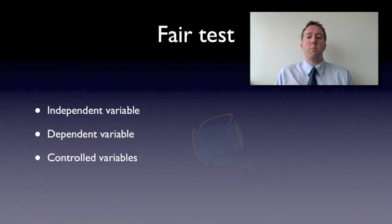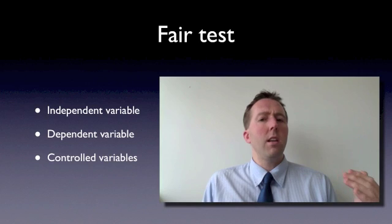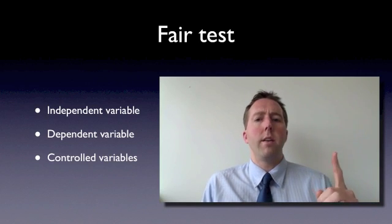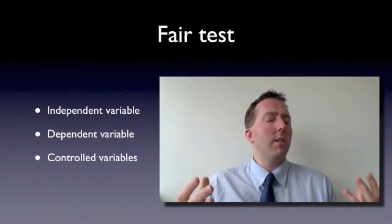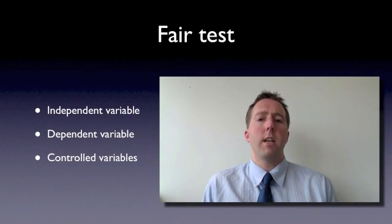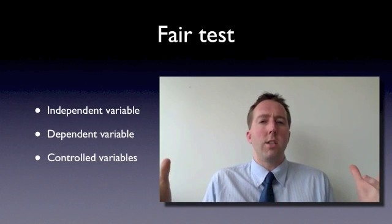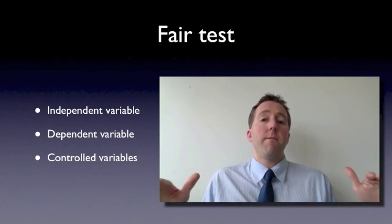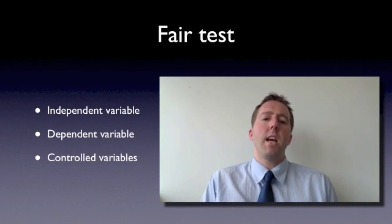When you do an experiment, it's really important that you think about the variables. Think about the independent variable. Hopefully there's only one, the one thing that you're going to change. Then the dependent variable. What is it that you're going to measure to find out some results? And then all the rest, all the other things that could change. How are you going to keep them the same so that they don't change, so that it is a fair test?